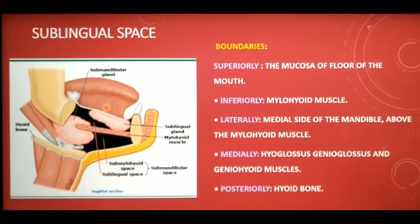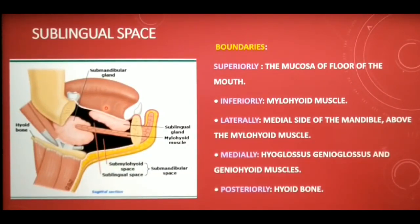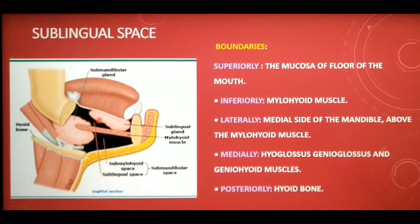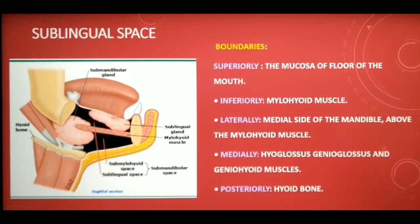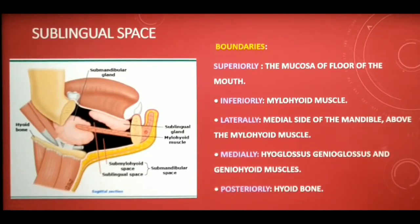The next potential primary space associated with the mandible is the sublingual space. This space is V-shaped and lies lateral to the muscles of the tongue. The teeth most frequently involved in sublingual space infection are the mandibular incisors, canines, premolars, and sometimes the first molars — whose apices are superior to the mylohyoid muscle. Therefore, odontogenic infections from these teeth are confined to the sublingual space. If root apices extend beyond the mylohyoid muscle, infection will spread into the submandibular space.